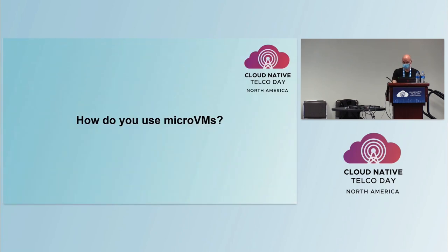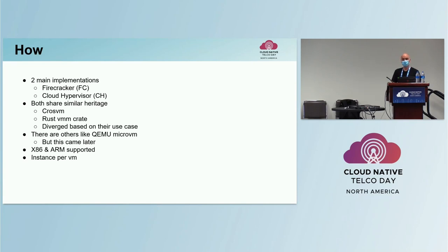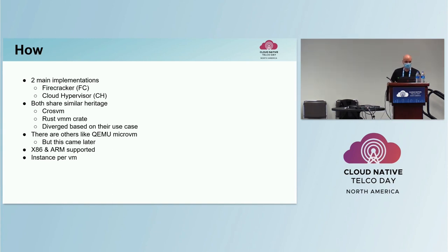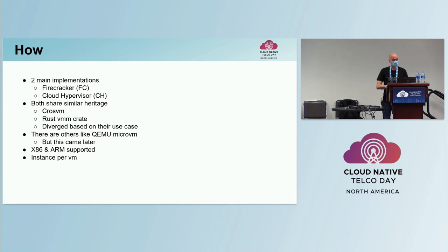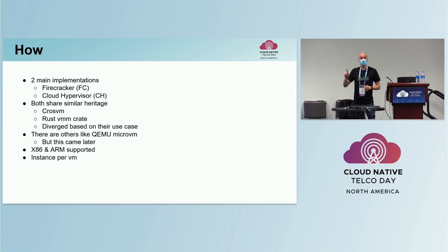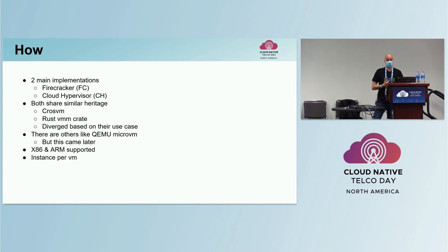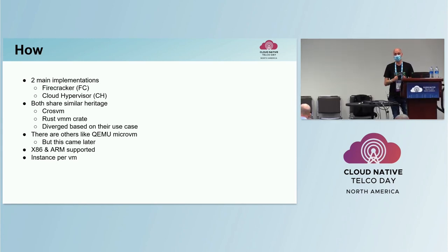So how do you use micro VMs? There are two main implementations. When I think about micro VMs, there's Firecracker and there is Cloud Hypervisor. They both have a similar heritage — they both started out from cross-VM work and both use the Rust VMM crate. But depending on their use cases, they have now diverged slightly. There are other solutions, such as community micro, but this disappeared after Firecracker and Cloud Hypervisor. Both support x86 and ARM, and essentially what you have to do is create an instance of Firecracker or Cloud Hypervisor per VM — essentially a process per VM.